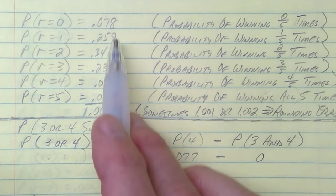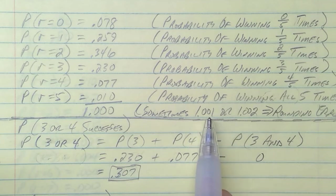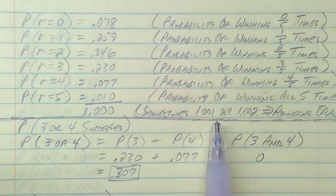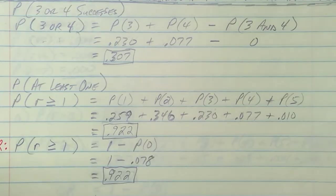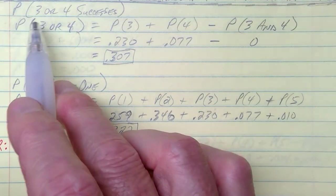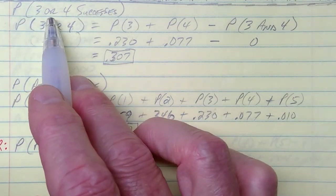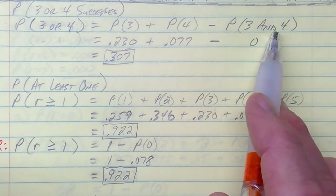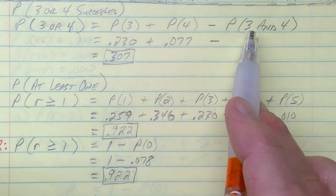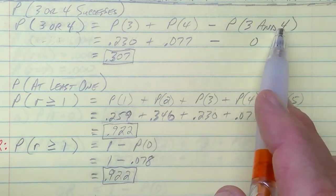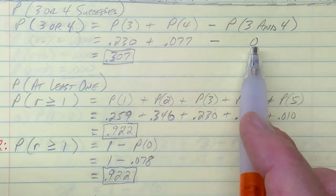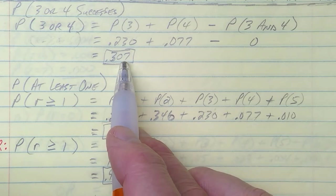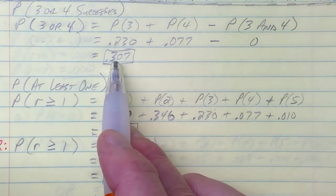Notice these probabilities add up to one — 100%. Sometimes in the table they're off just a hair because each number has been rounded slightly, so when you round a bunch of numbers and add them up, it can be slightly off. For the probability of three or four successes, 'or' is your addition rule: P(3) + P(4) minus the probability that both happened simultaneously. But I can't win three and four at the same time, so that last term is zero. Adding P(3) and P(4) from the table gives about 31%.